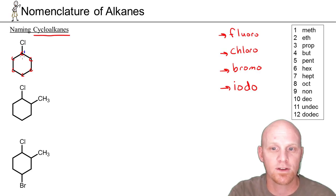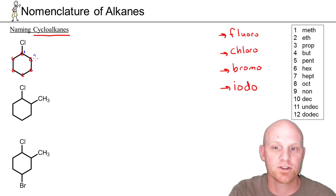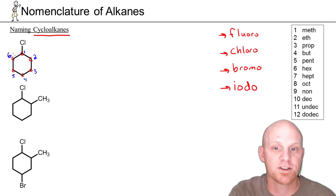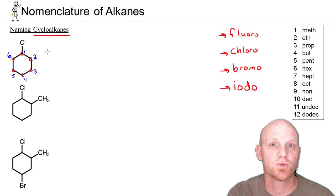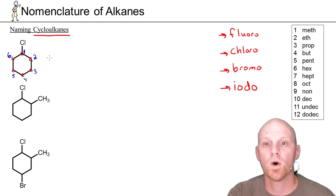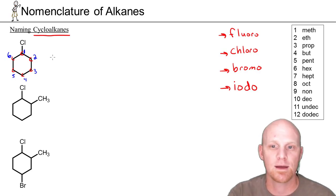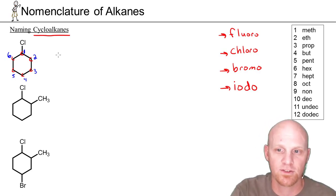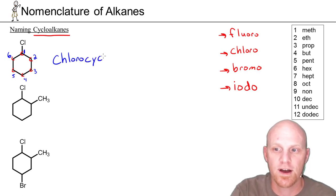With only one substituent, whether you go around clockwise or counterclockwise is arbitrary. If there were other substituents, you'd go whichever direction got you to the second substituent sooner to give it a lower number. With one substituent, it always by default has to be at position 1, and as a result, you don't include the 1 in the name. So instead of saying 1-chlorocyclohexane, we simply say chlorocyclohexane.